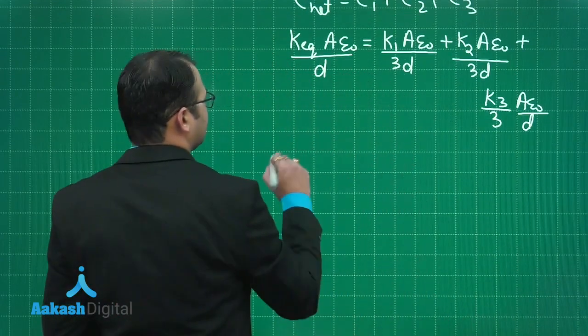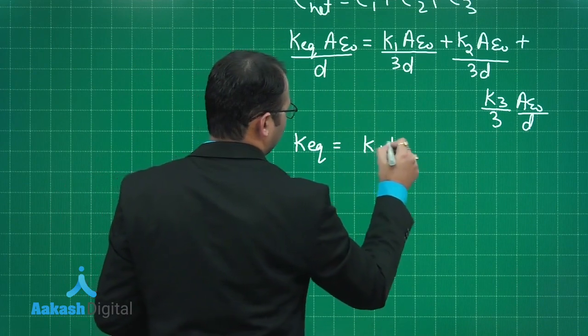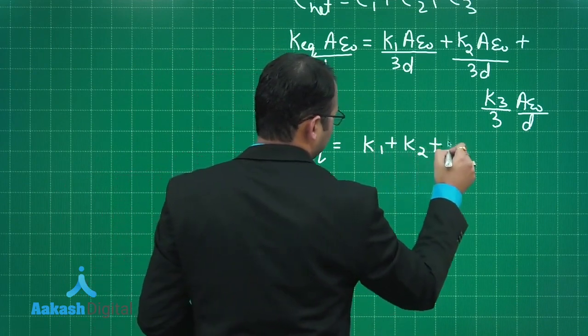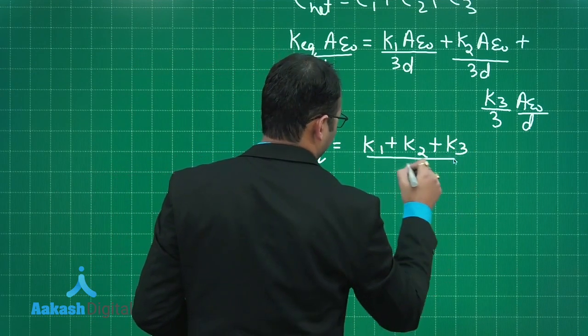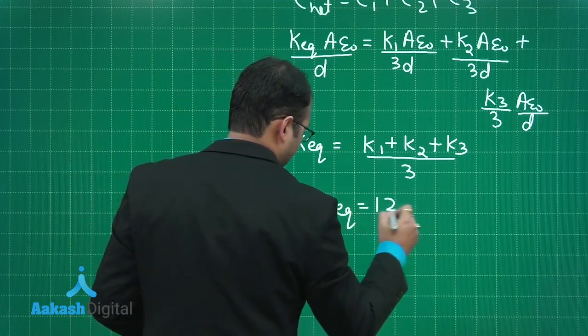Further solving this, I will get K equivalent equals K1 plus K2 plus K3 by 3. When you put down the values, you will get K equivalent as 12.